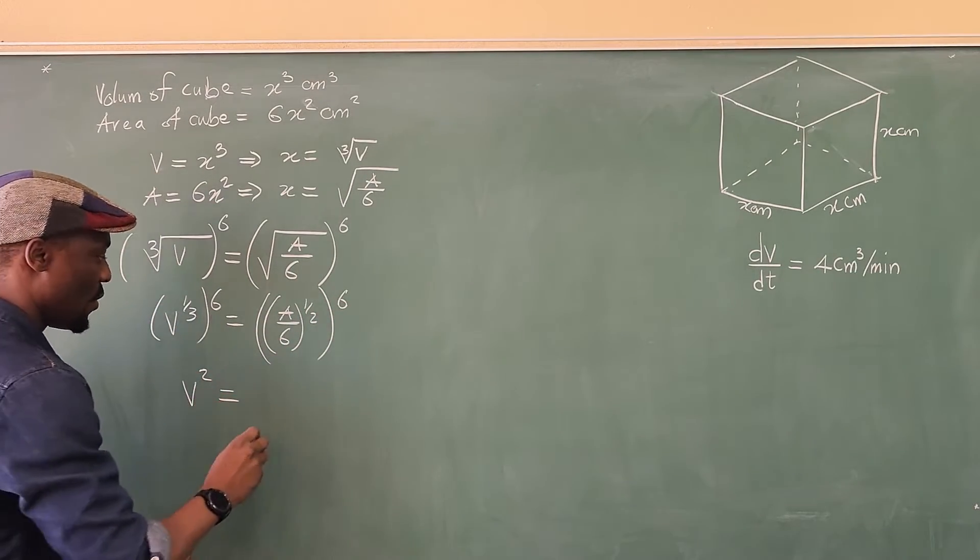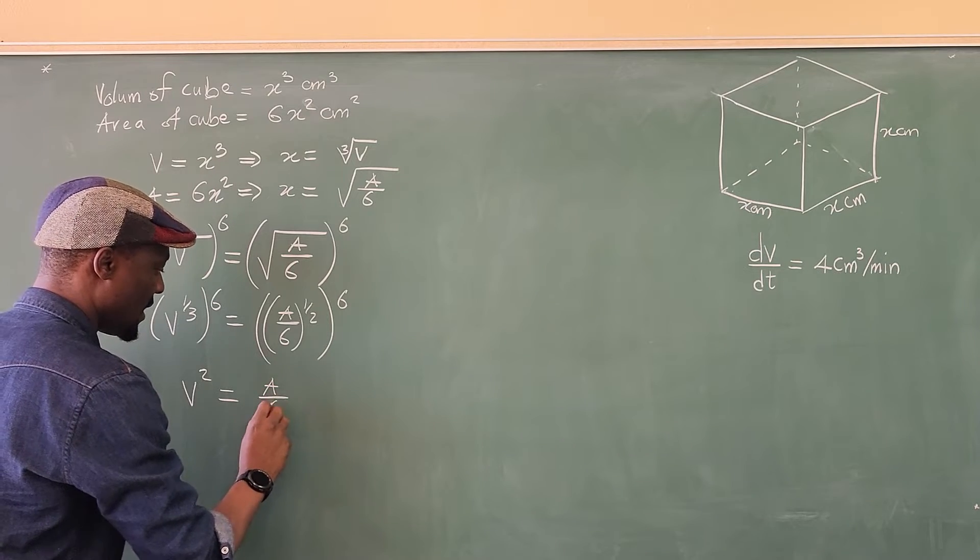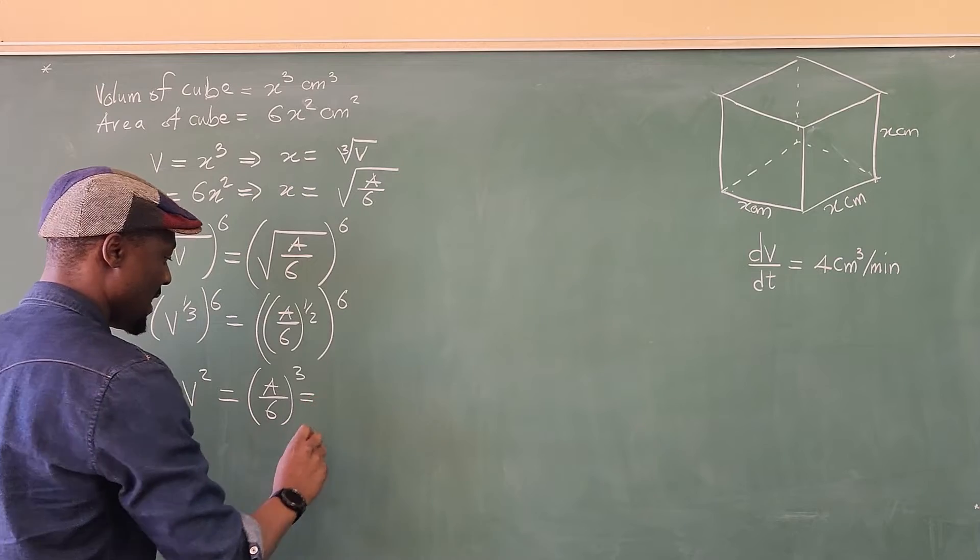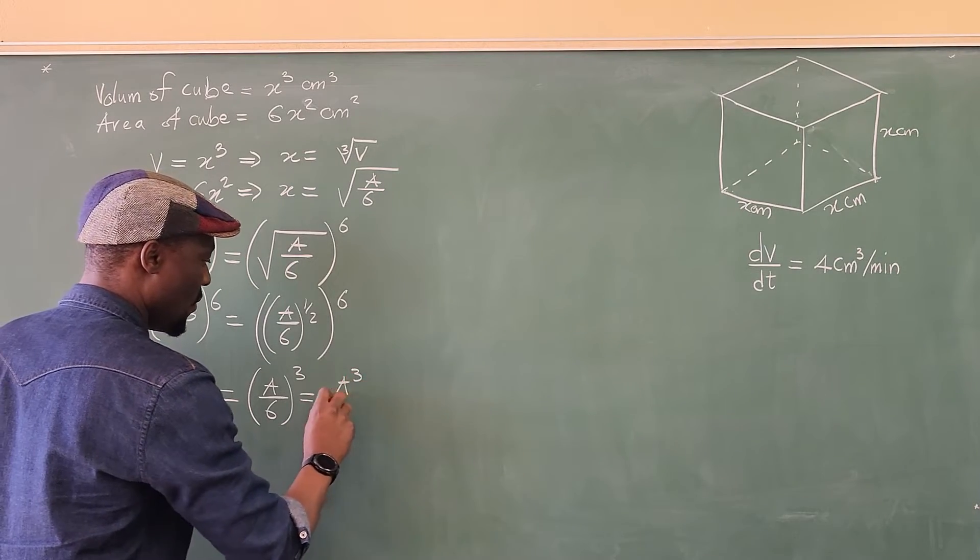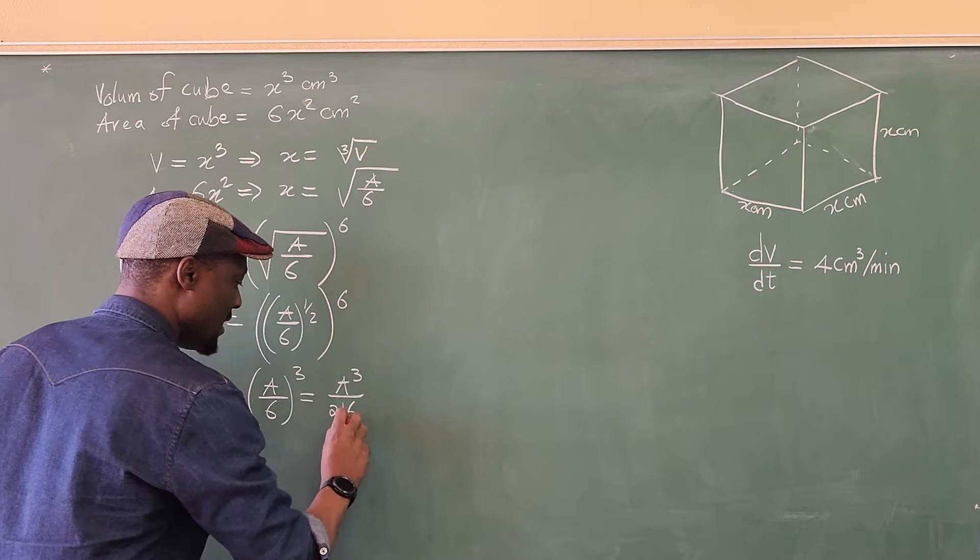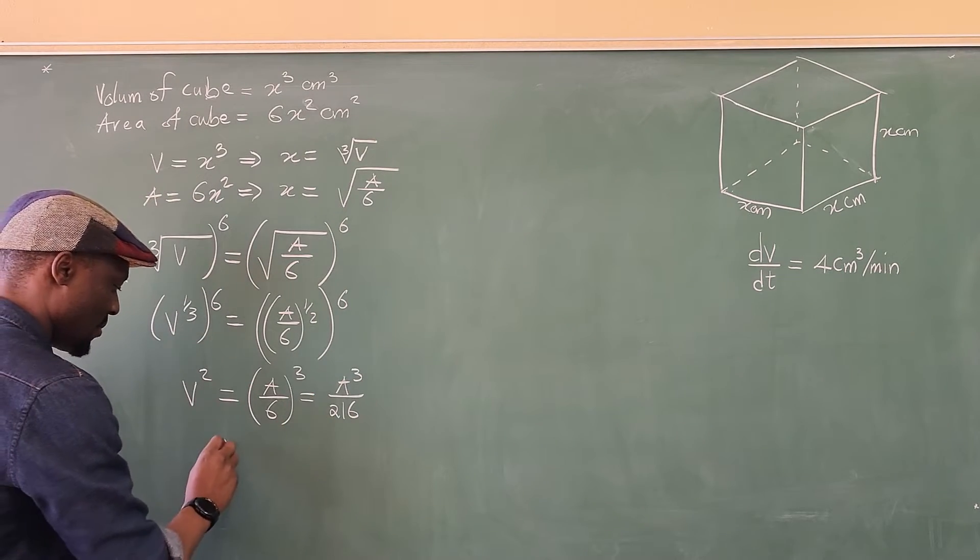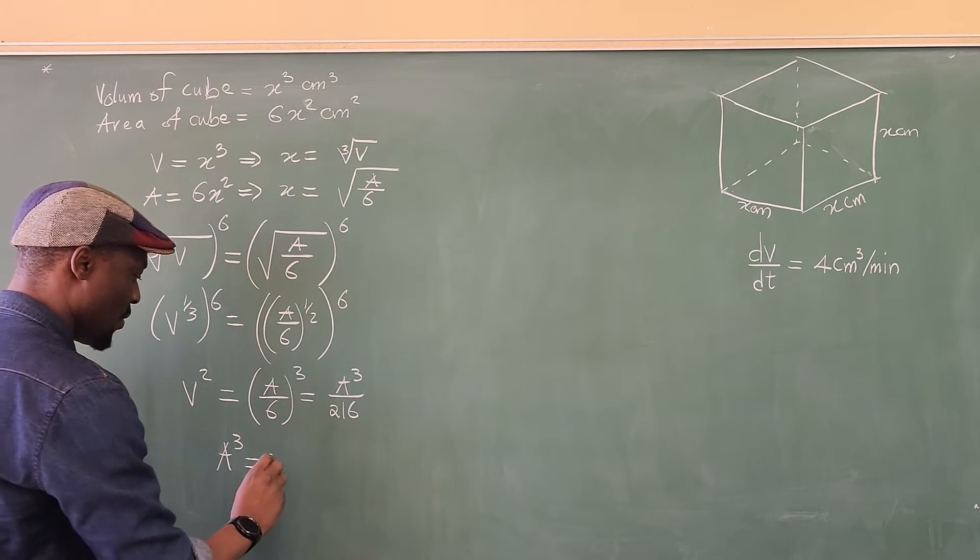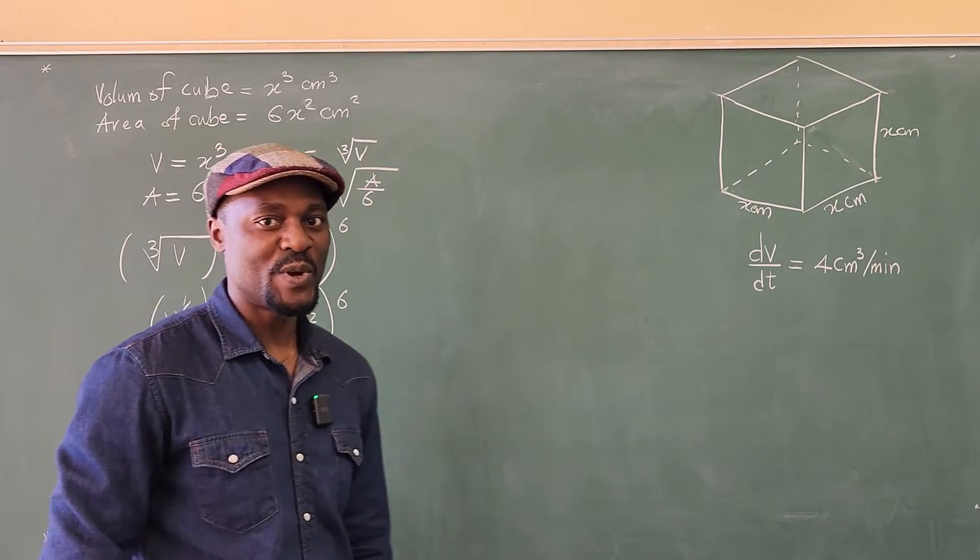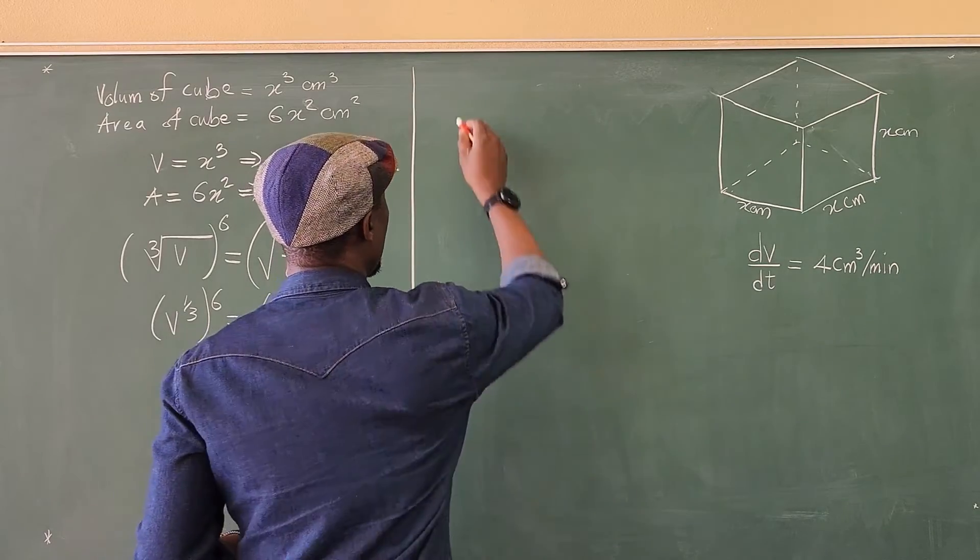So what do you have here? You have V squared is equal to A over 6 cubed, which is the same thing as A cubed over 6 times 6 times 6, which is 216. If we cross multiply, you end up with A cubed is equal to 216 V squared. That's what we need. This is the ultimate goal.